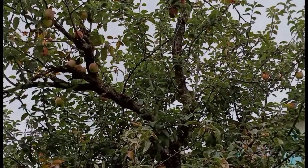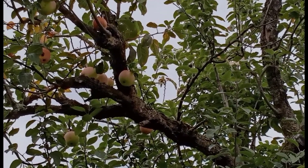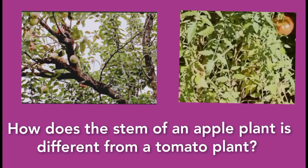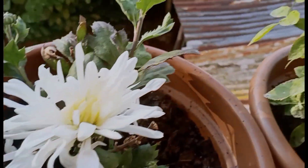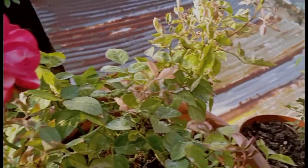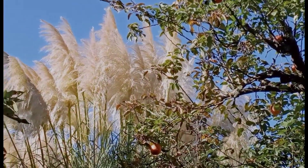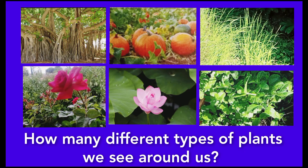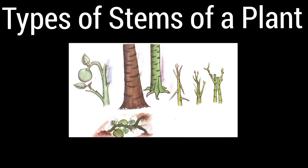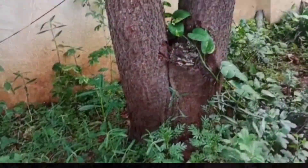Stem delivers water to the leaves. Children, did you ever observe the stem of a tomato plant and how it is different from the stem of an apple plant? Do both stems look the same? Did you ever think why some plants are big and why some are small? To answer all these questions, let us discuss the types of stems of a plant.